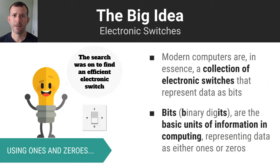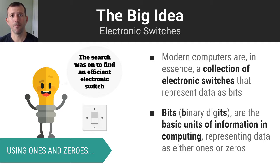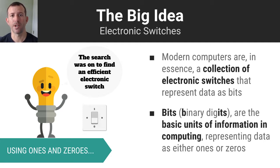The big idea is that all information inside a computer is stored as bits. A bit is a fancy way of saying binary digit. Binary means a system that employs only ones and zeros to represent things. So each bit, or binary digit, is a one or a zero. If you string ones and zeros together, you can represent data of any kind. Inside a computer, you need to think of it as a series of electronic switches, just like in your house or apartment.